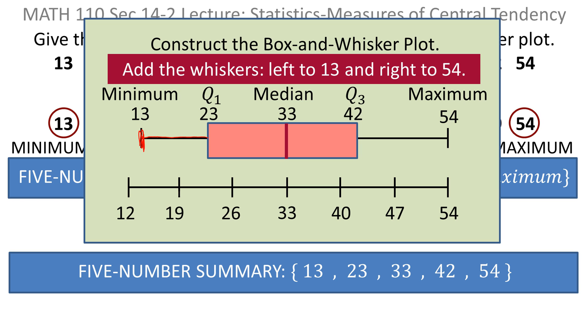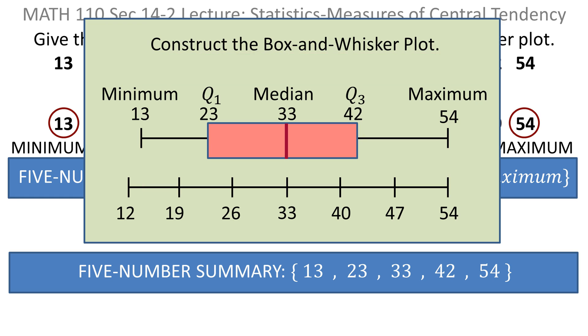Remember the minimum was 13 — that's about right here. And to the maximum, which happened to be 54. And there you have it, your box and whisker plot.